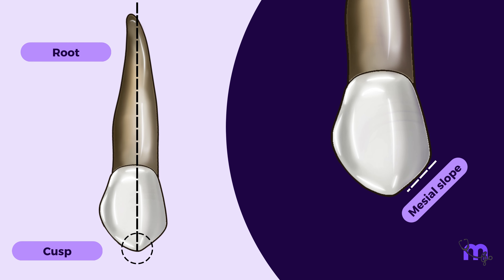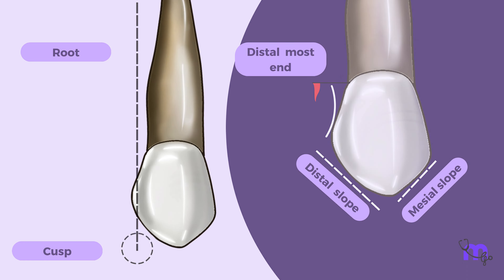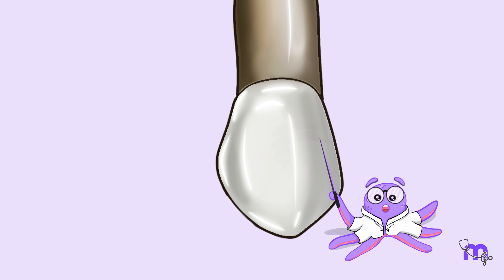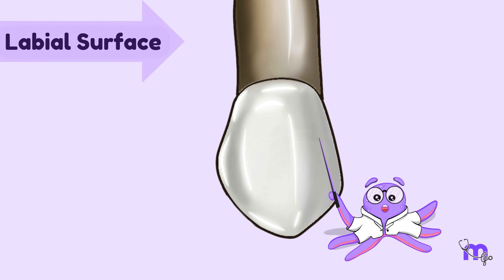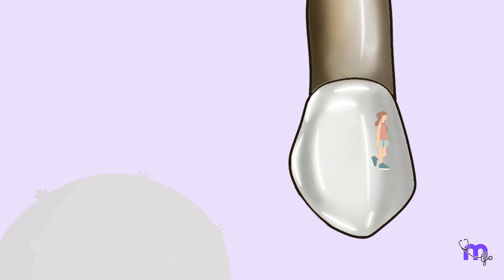In this video, we will discuss the maxillary canine. Let's begin with its chronology. The first evidence of calcification occurs at 4–5 months. Enamel formation is at 6–7 years. Eruption takes place at 11–12 years, and root formation is completed at 13–15 years.